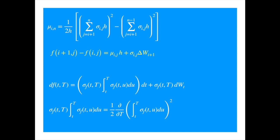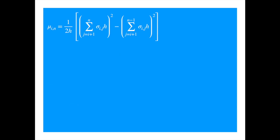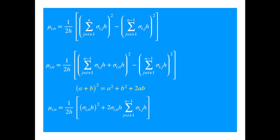You can also write the drift alternatively by splitting the first summation into two intervals. And then applying the a plus b squared formula, you get this expression after the cancellation of the square of the summation terms.